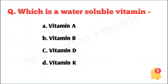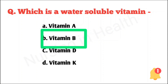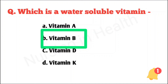Which is a water-soluble vitamin? Vitamin A, vitamin B, vitamin D, or vitamin K. Right answer option B: vitamin B. Note: fat-soluble vitamins are A, D, E, and K; all others are water-soluble vitamins.